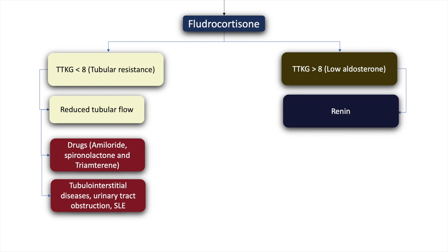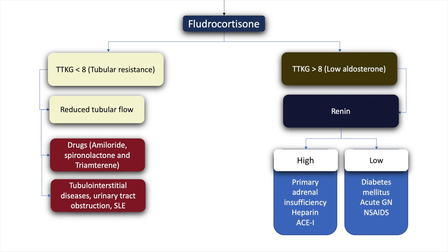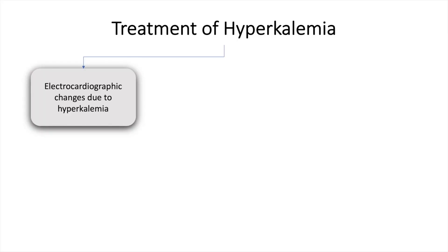If on administration of fludrocortisone the TTKG resolves to more than 8, this indicates low aldosterone, and serum renin levels may be useful. A high serum renin level may indicate primary adrenal insufficiency, heparin use, or ACE inhibition. A low serum renin level could indicate diabetes mellitus, acute glomerulonephritis, or the use of non-steroidal anti-inflammatory drugs.